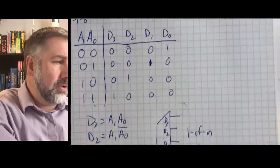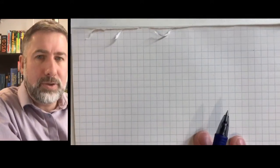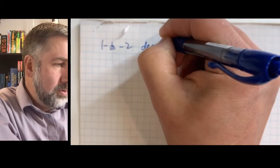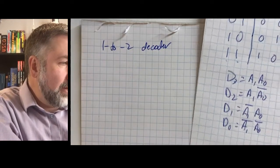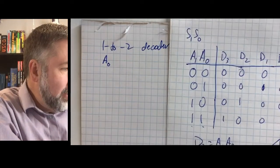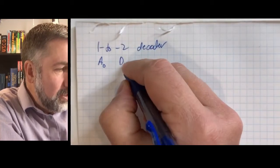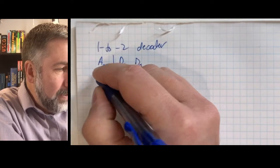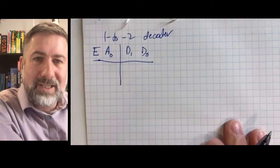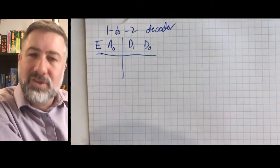What would a 1-to-2 decoder look like? Let's build one. If we have an address line, address 0, it's going to give us two output lines, D1 and D0. Let's give it an enable as well so we can see how that works in the truth table. We're going to need the enable to use this to build larger decoders.